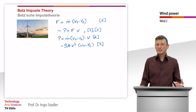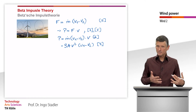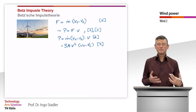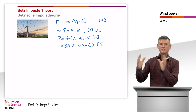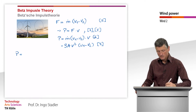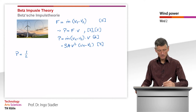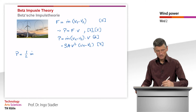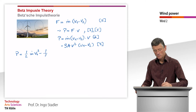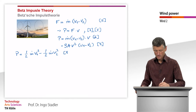We can also look at the power that the wind turbine extracts from the wind by considering the different energy contents in the wind before and behind the wind turbine. So we can express the extracted power as the kinetic power of the wind before the turbine minus the kinetic power behind the wind turbine. That would be equation 8.